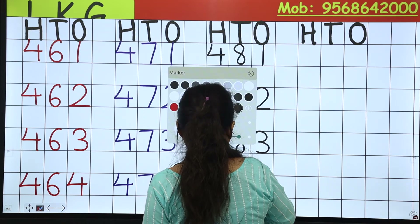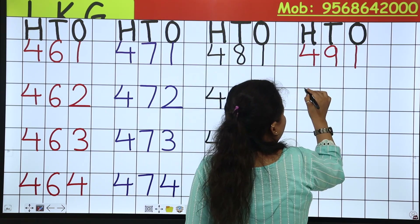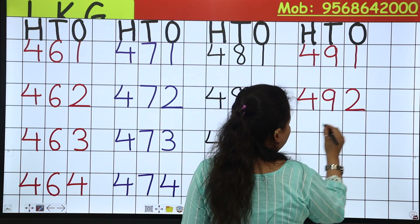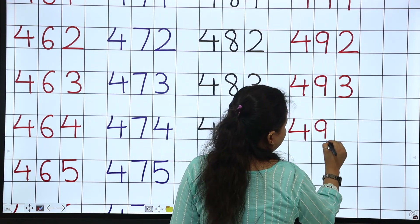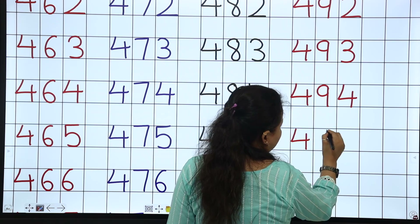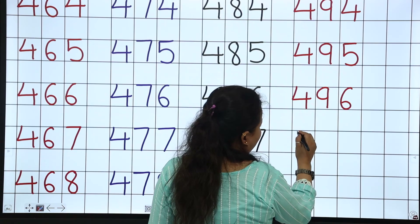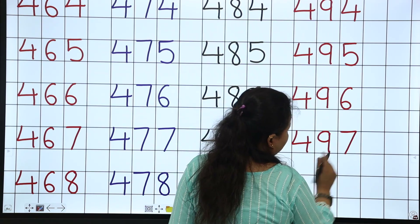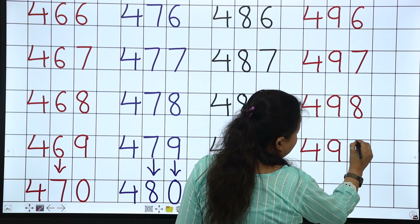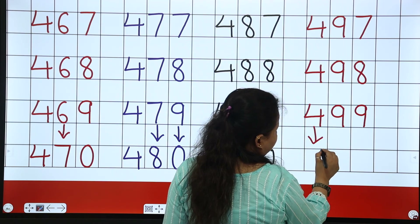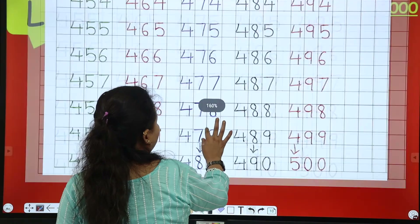491, 492, 493, 494, 495, 496, 497, 498, 499. Next is after 4, 5, 0 — that is 500. So these are the numbers from 451 to 500.